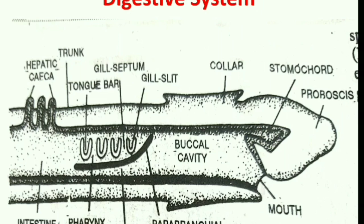The alimentary canal is complete and straight — a muscular tube with two openings, mouth and anus. Balanoglossus is a plankton feeder, feeding on phytoplankton, zooplankton, and organic debris in the mud. It is essentially a filter feeder, and the alimentary canal is covered by cilia throughout its length. The parts are: mouth, buccal cavity, pharynx, esophagus, intestine, and anus.